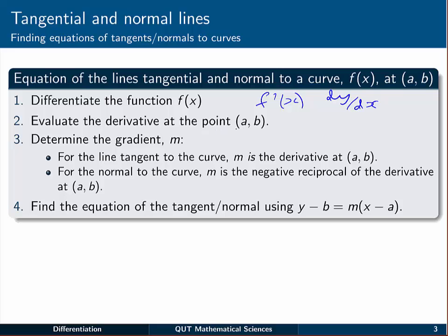Next we evaluate the derivative at the point (a, b), so in other words f'(a). Remember that this tells us the slope of the tangent line to the curve.